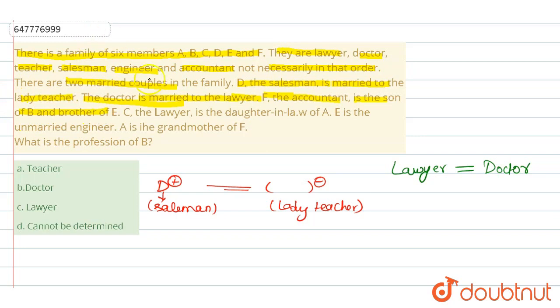So, F is the accountant. F accountant is the son of B and brother of E. B ka son hai F. Then, humein detail mil gayi hai, accountant hai. This is the accountant. Then, dekhiye, hamaare paas, next line mein...